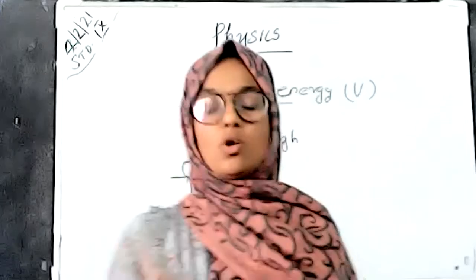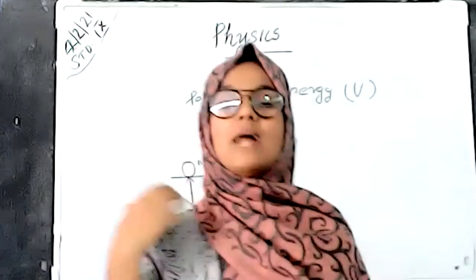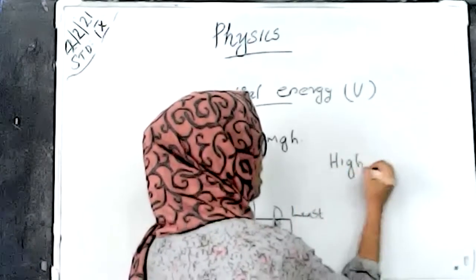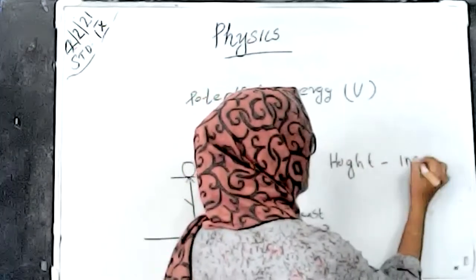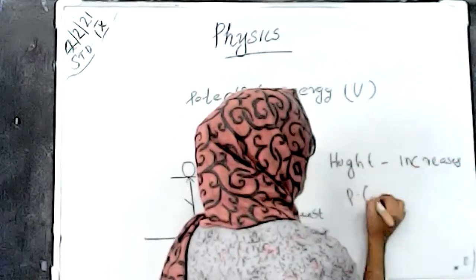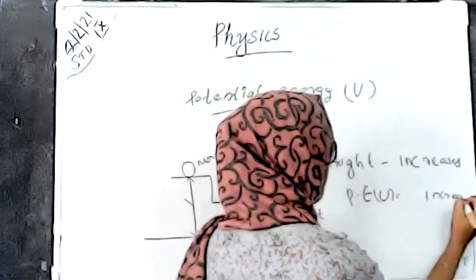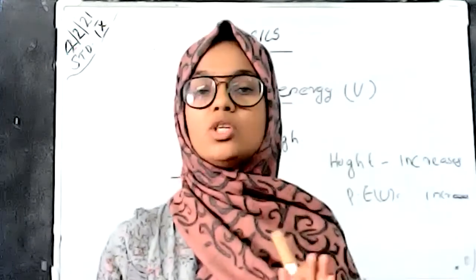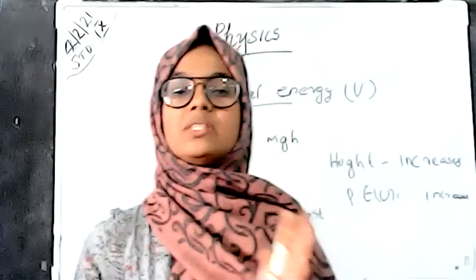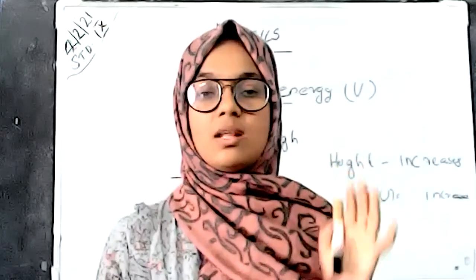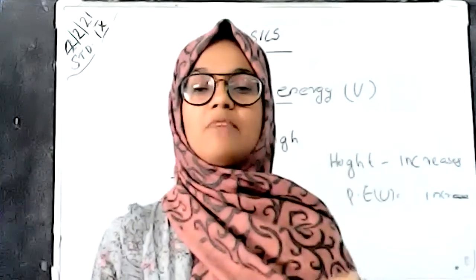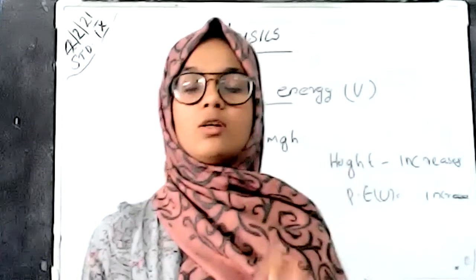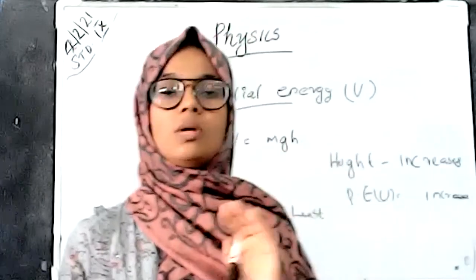The height of the object is higher, so the energy stored in that object is higher. As the height increases, the potential energy increases. The object placed at more height has more energy. The potential energy is the energy possessed by a body by virtue of its position or its state. Kinetic energy is the energy possessed by virtue of its motion. When we place an object at more height, it has more potential energy — height and the amount of energy are connected to each other.